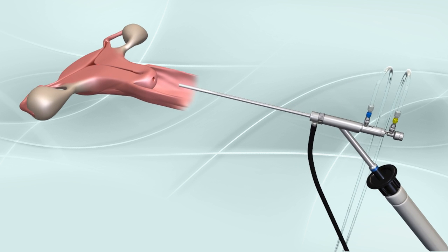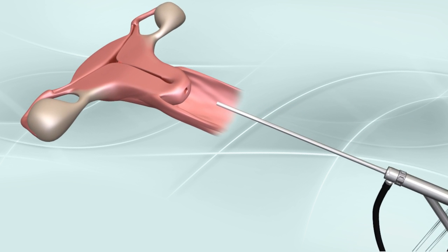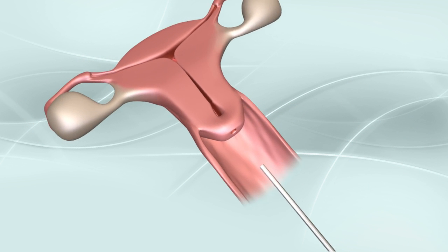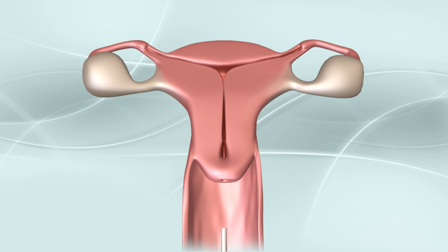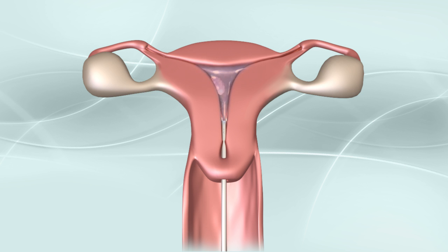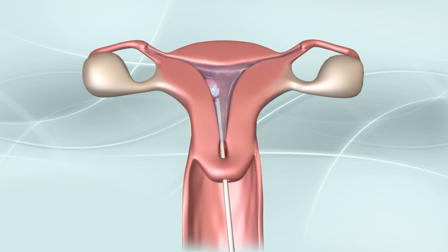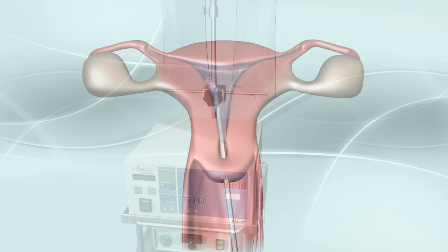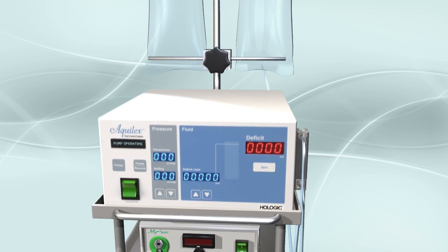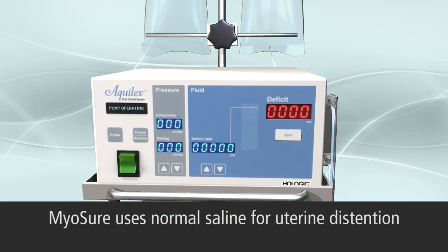The Myosure system enables simple and efficient hysteroscopic removal of tissue. To achieve and maintain uterine distention and optimal visualization while rapidly cutting and removing tissue, it is important to understand the unique fluid characteristics of the Myosure procedure.